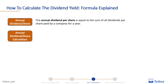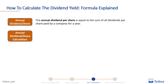The most common method is to multiply the latest dividend by the company's dividend frequency. As we saw in the first lesson of the course, the dividend frequency is a financial metric that tells you how often a company pays a dividend during a year. A dividend frequency of 4 indicates that the dividend is paid quarterly.